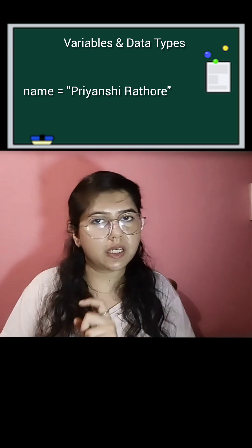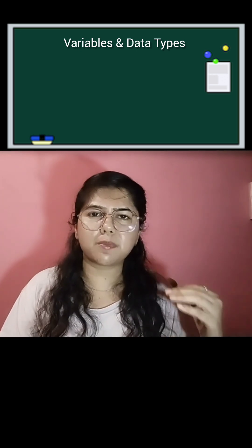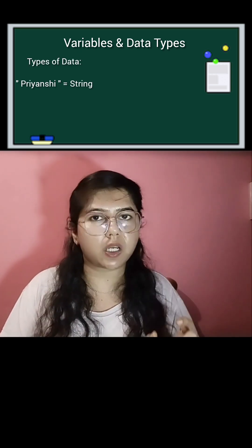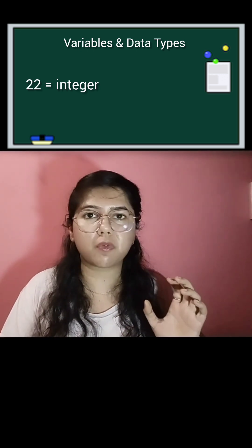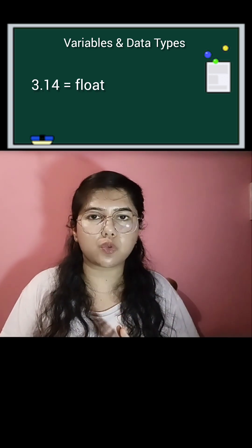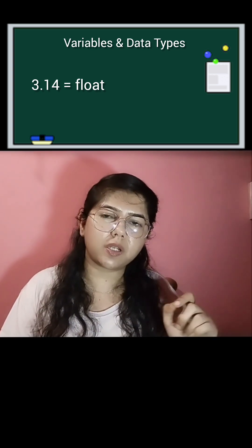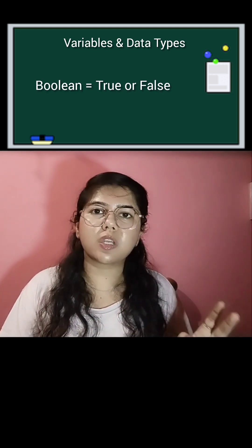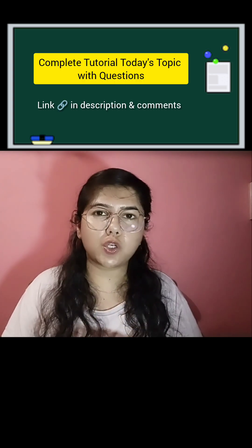Now let's learn about data types. There are many types of data. For example, 'Priyanshi' is a name, so it is a string type of data. If you want to store integer type of data, you can do that. Third is float type of data, where you can store decimal values — for example, 3.14, 5.6, or 10.11. Another type is boolean, where you can store or get an answer as true or false.